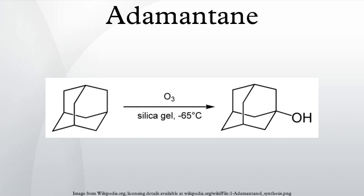Uses: Adamantane itself enjoys few applications since it is merely an unfunctionalized hydrocarbon. It is used in some dry etching masks and polymer formulations. In solid-state NMR spectroscopy, Adamantane is a common standard for chemical shift referencing. In dye lasers, Adamantane may be used to extend the life of the gain medium. It cannot be photoionized under atmosphere because its absorption bands lie in the vacuum ultraviolet region of the spectrum. Photoionization energies have been determined for Adamantane as well as for several larger diamondoids.